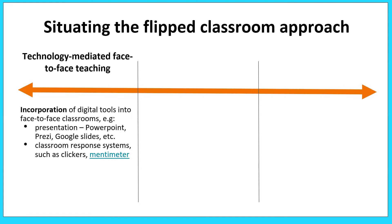For instance, using classroom response systems where you could be using clickers, Mentimeter, or any other software where you can check the muddiest point. Or you could be giving students an activity in the form of think, pair and share — posting something on the board, asking students to think about it, discuss, and then respond by making their choices on Mentimeter.